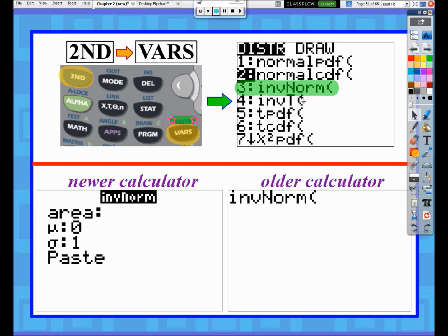Now inverse norm for your older calculator people is only going to require you to put in three numbers, and they have to be separated by commas. Your newer calculator people, it'll tell you exactly what it's asking for. Two of the numbers are the same as before - the mean and standard deviation - but instead of a lower bound and upper bound, it's going to ask specifically for area.